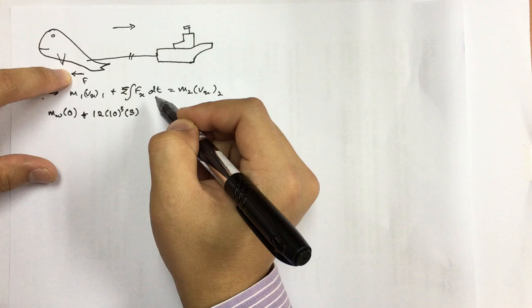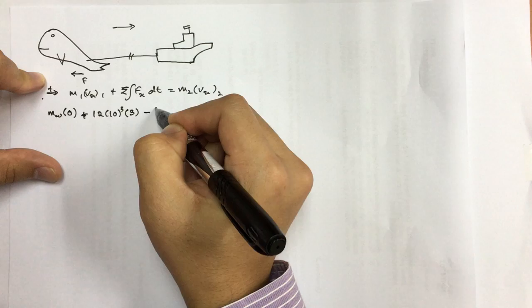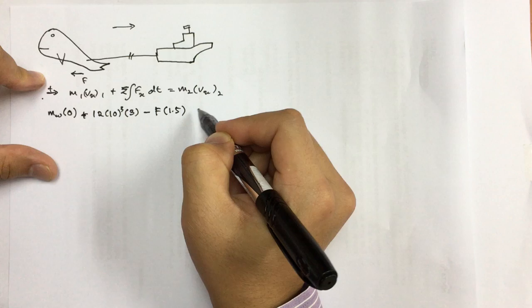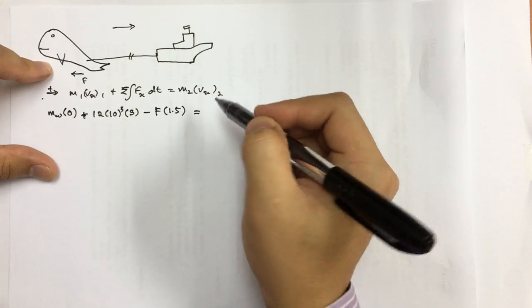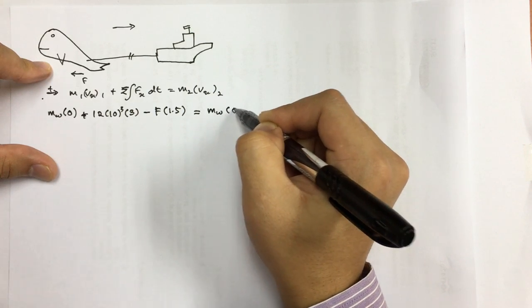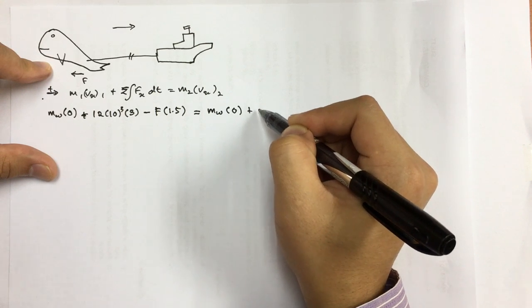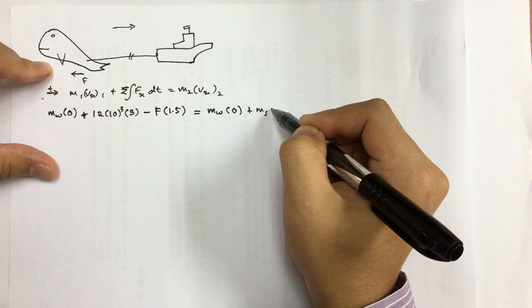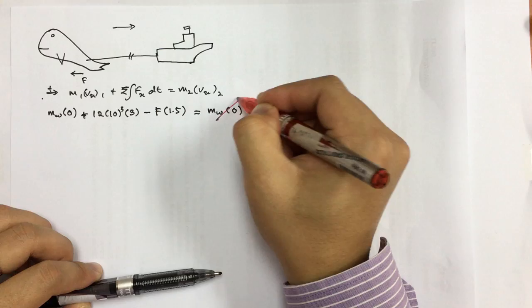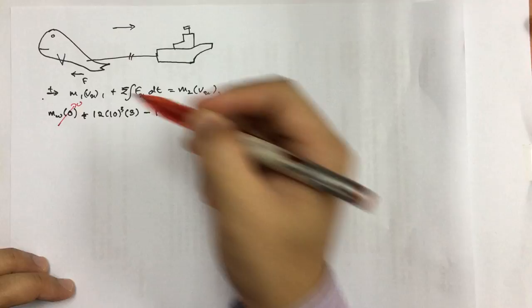We need to consider this force. We have this force minus F times 1.5 second movement. Mass number 2, the mass of the whale times the velocity of the whale after the operation is finished is 0, and also the velocity of the ship is 0 as well. For the right hand side, this one is equal to 0, this one is equal to 0, and this is equal to 0.